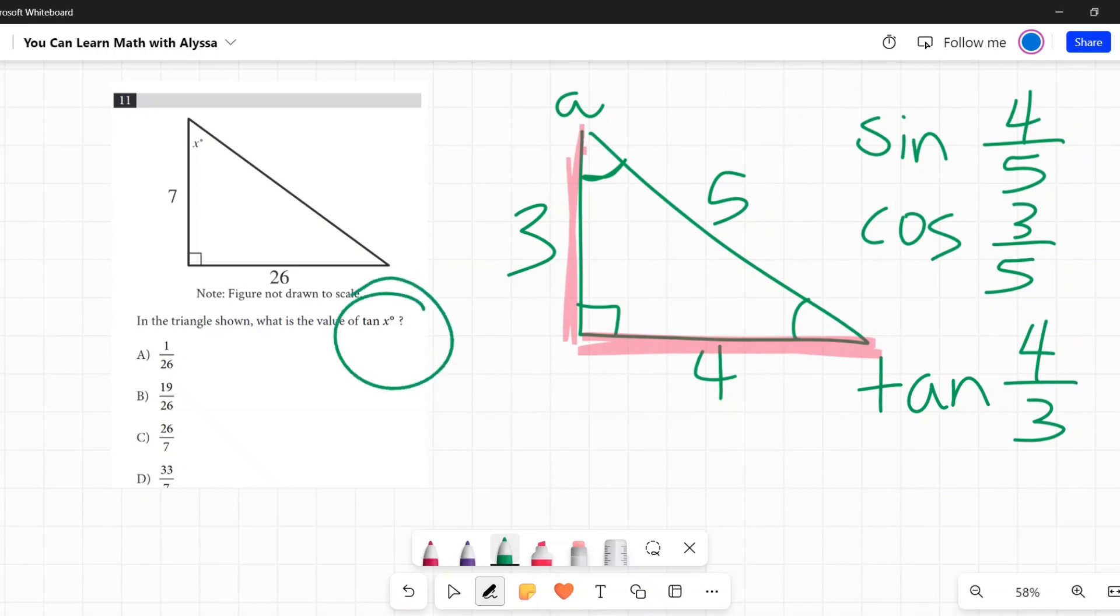So this time they are asking us for tangent. As we said, the tangent of x is going to be that opposite side, which is 26, over the adjacent side, the leg that is touching that angle, not the hypotenuse. The hypotenuse is the longest side. It does not have a part in tangent.